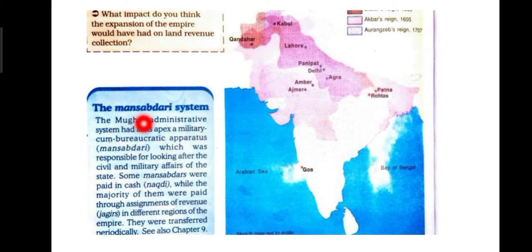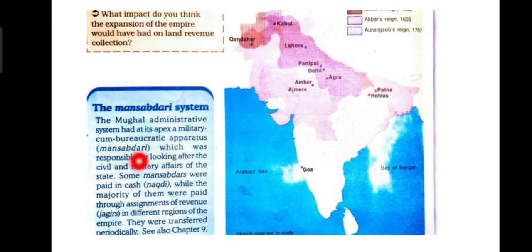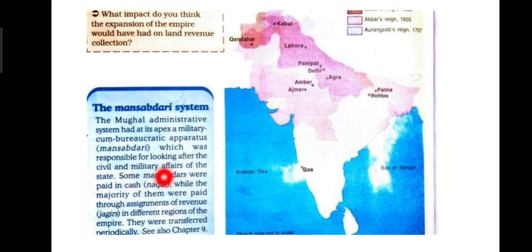We will now read about the Mansabdari system. The Mughal administrative system had at its apex a military-cum-bureaucratic apparatus called Mansabdari, which was responsible for looking after the civil and military affairs of the state.